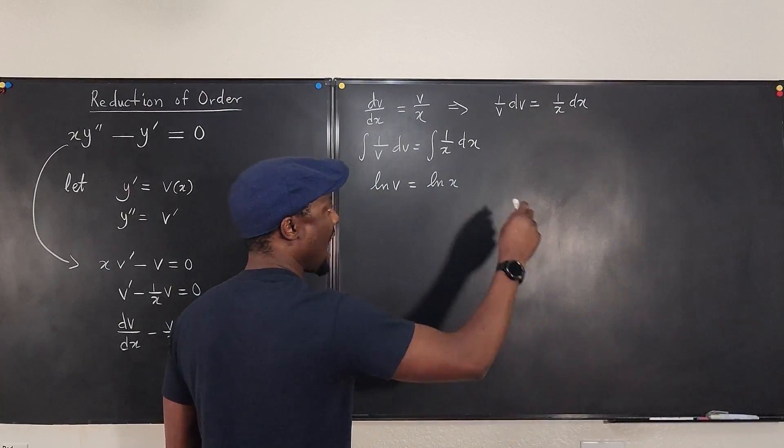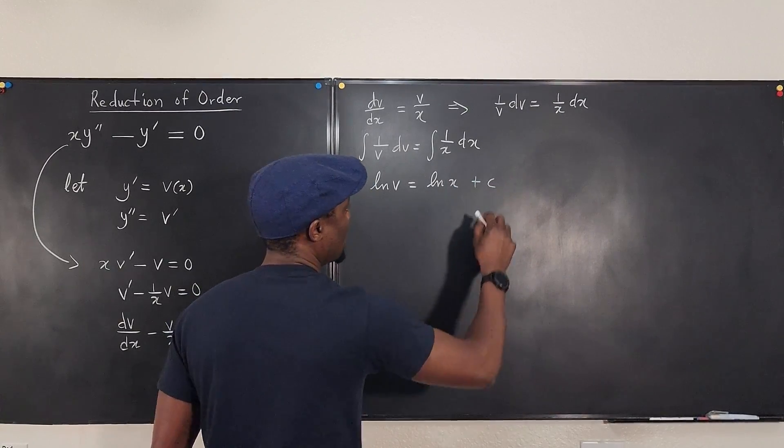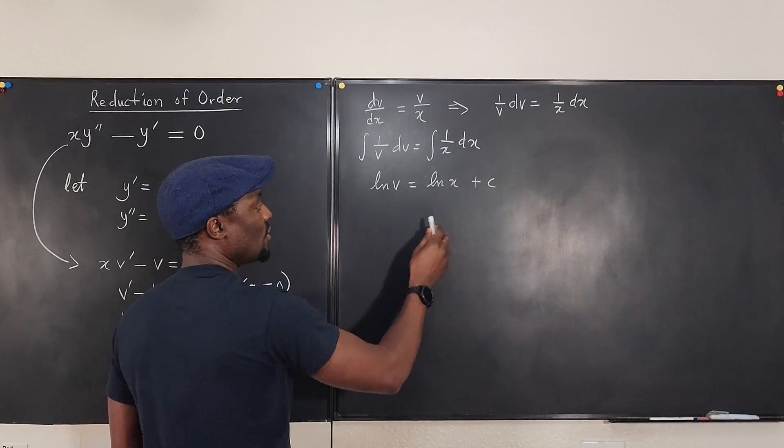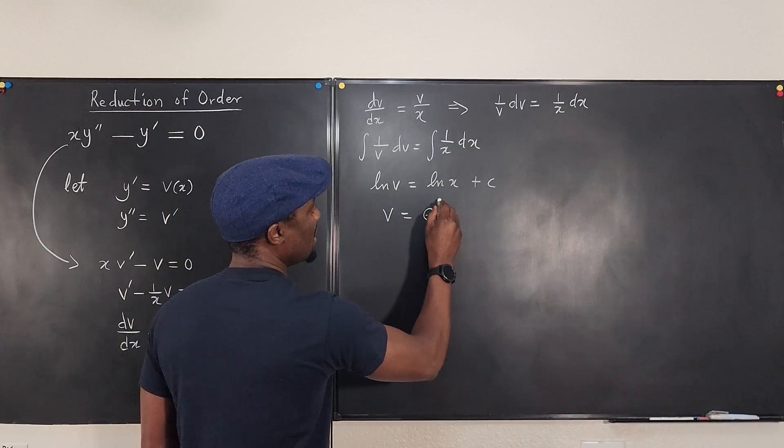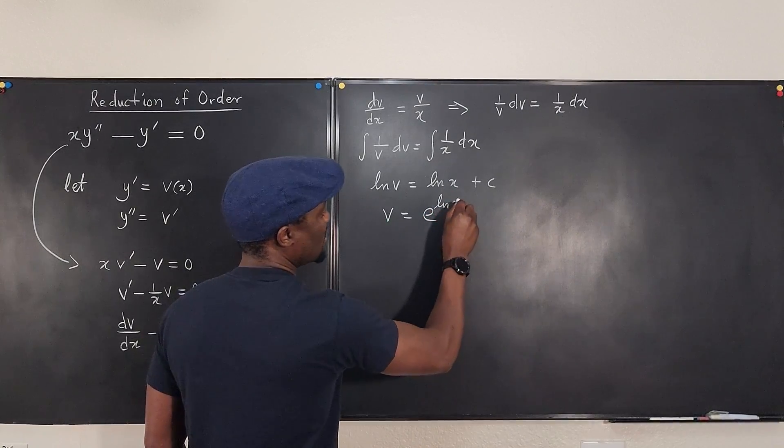And remember, always add your plus c to the right-hand side. Now, to get v, we just raise both sides to power e. So we're going to have v equals e to the natural log of x. Let's just write it this way.